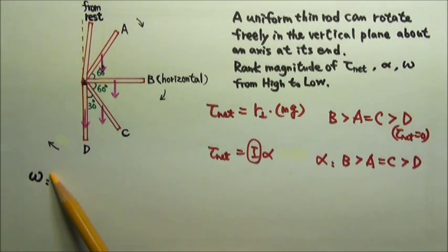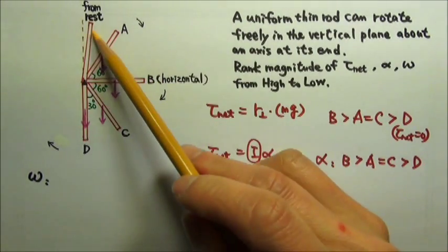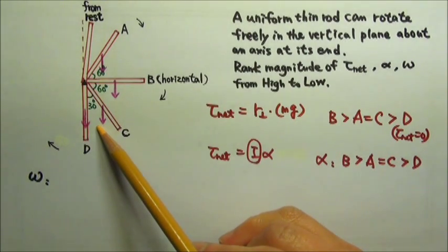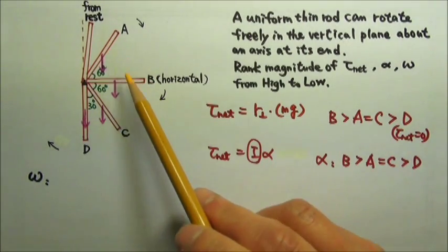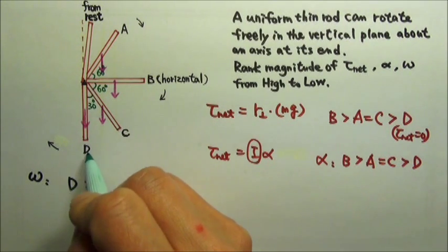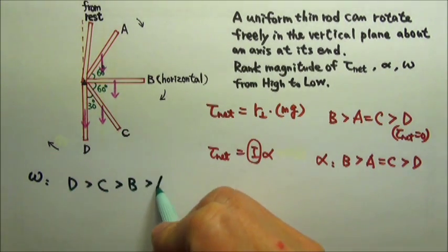To rank omega, we can look at energy. As the rod swings down, it loses gravitational potential energy and gains kinetic energy. It's going to get faster and faster. So for omega, it's the highest at the lowest point D, and then C, and then B, and then A.